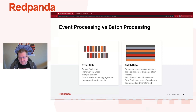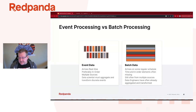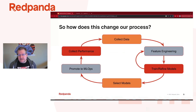When you get events instead of batch data, they typically arrive in real-time, preferably in order like how they actually happened in reality. You're going to get them from multiple sources. As a data scientist, you need to aggregate all that information, transform it into discrete events, and make all of your own features. How does this really change our process of how we build models?